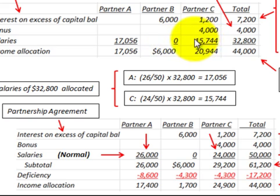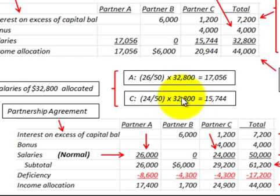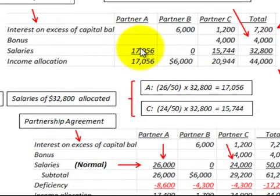For Partner C, we use the same approach. Their normal salary from the agreement was $24,000 out of the total $50,000 normal salaries. So their fraction is $24,000 ÷ $50,000, multiplied by $32,800 — the total salaries available to allocate — giving Partner C a salary allocation of $15,744. Adding $17,056 plus $15,744 confirms the full $32,800 in salaries is allocated.